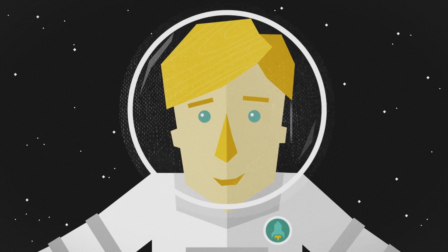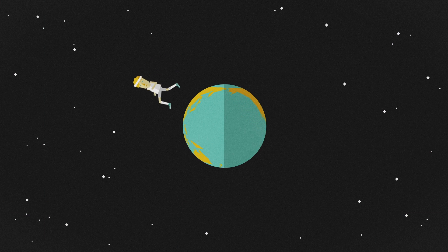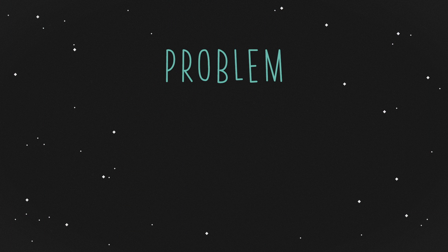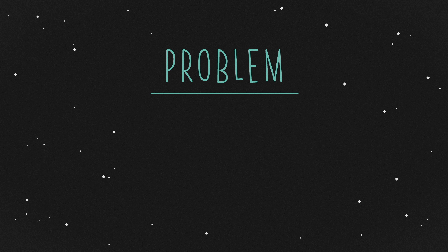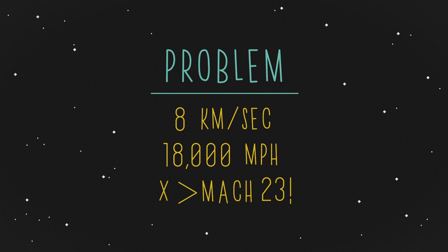So technically, if you ran fast enough and tripped, you could miss the Earth. But there's a big problem. First, you have to be going eight kilometers a second. That's 18,000 miles an hour, just over Mach 23.